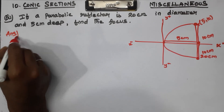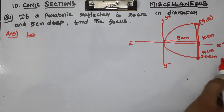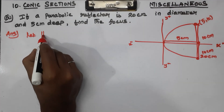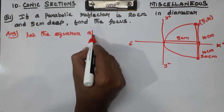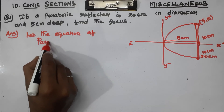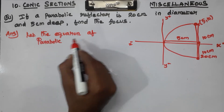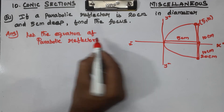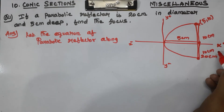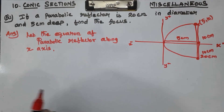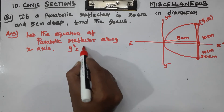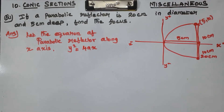So let's find the equation of the Parabolic Reflector. The equation of the parabola along the x-axis — the formula is y² = 4ax. The question may look difficult but the answer is very easy. y² = 4ax.